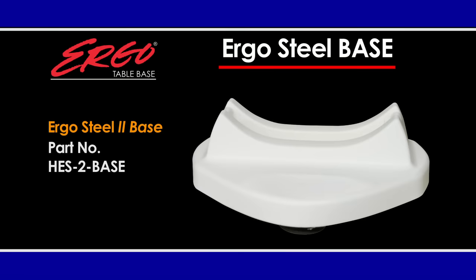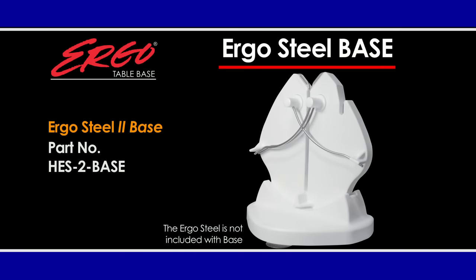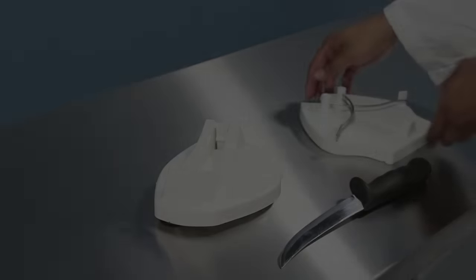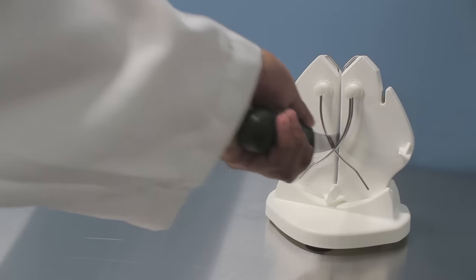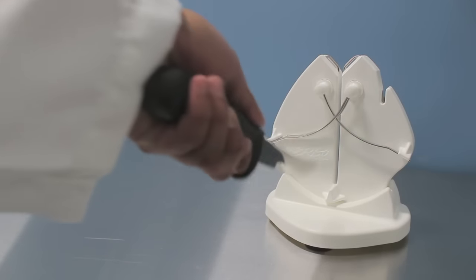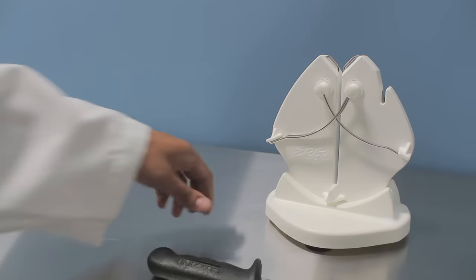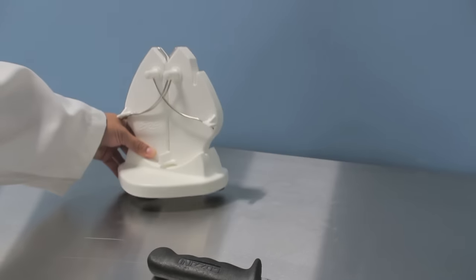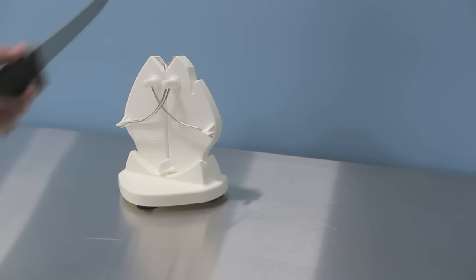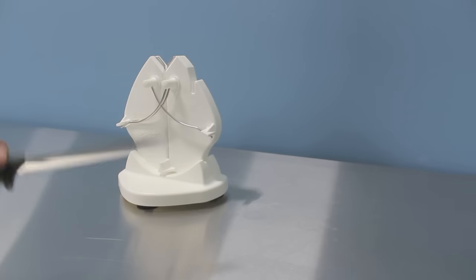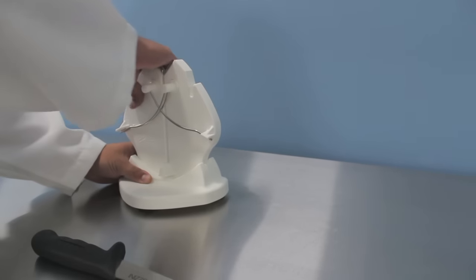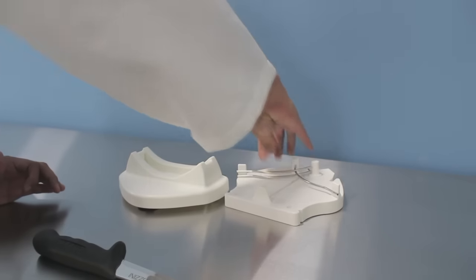The ErgoSteel 2 table base is the ideal portable, removable, secure solution for positioning your ErgoSteel 2. The ErgoSteel 2 simply snaps into the table base and is locked in place. The table base holds firmly to virtually any smooth, flat surface, is easily removable and can be moved from one workstation to the next in seconds. The placement of the ErgoSteel 2 can now be tailored by each operator to provide maximum workflow, safety and comfort.